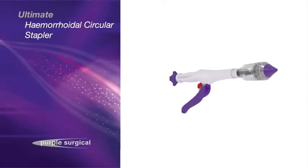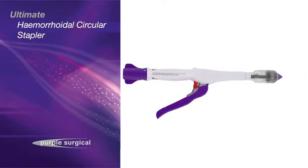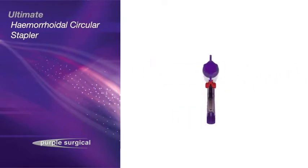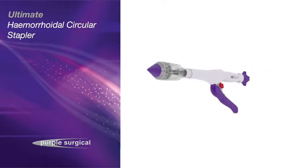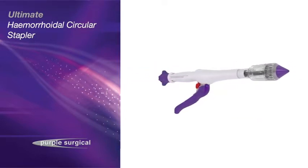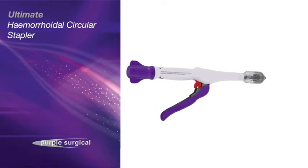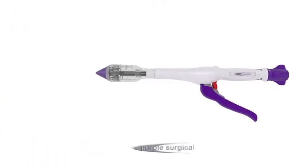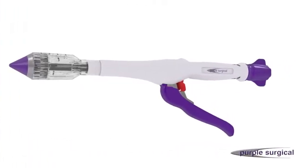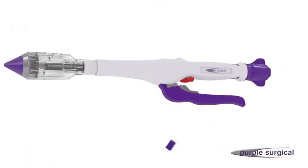The Purple Surgical Ultimate Hemorrhoidal Circular Stapler with Dual Safety and Transparent Cartridge is used in the surgical treatment of hemorrhoidal disease by placing a staggered circular double row of titanium staples in the tissue and resecting the excess tissue to create a circular anastomosis. The device can be activated when the handle is squeezed firmly to its limit.